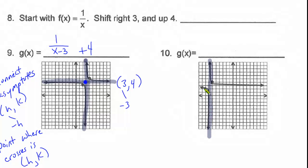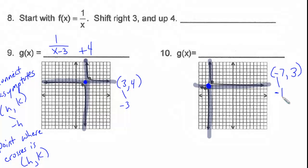For number 10, draw the asymptotes and where they connect is the h and k. In this problem h is negative 7 and k is 3, so up 3. Remember in the formula we use the opposite of h, so this is going to be plus 7.